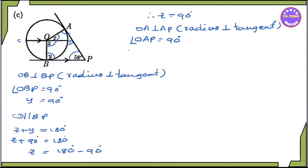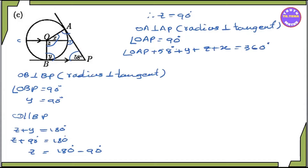We are going to go 360 degrees. Angle OAB plus 50A degrees plus Y plus Z plus X equal to 360 degrees. Angle OAB is 90 degrees. So: 90 degrees plus 58 degrees plus Y is 90 degrees plus Z is 90 degrees plus X equal to 360 degrees.